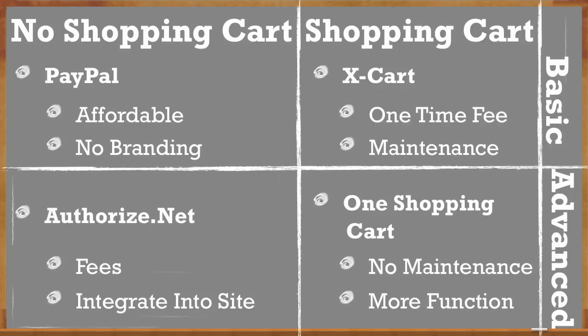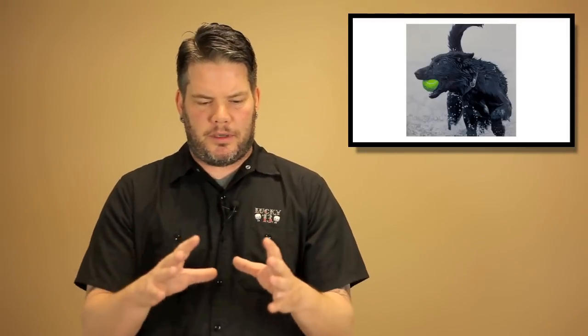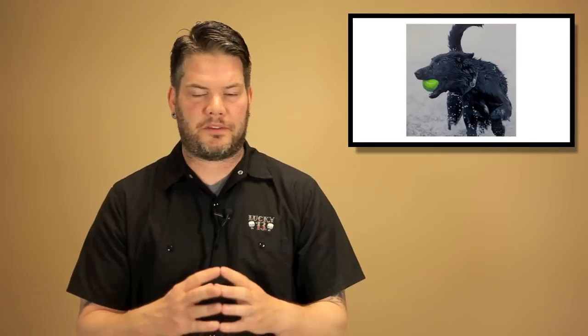The second option if you're looking for a shopping cart system is you can go with what's called a third-party shopping cart. These would be things like oneshoppingcart.com, Infusionsoft, something like that. Now with these guys, they're going to be a little less branded because you're going to end up sending somebody over to another website to take care of your business. But what's really good about these things is there's developers that are working on those things all the time. You don't have to worry about the maintenance. They usually have more functionality. They've got like mailing lists and all that other stuff kind of integrated. So it's really more of a rounded solution.